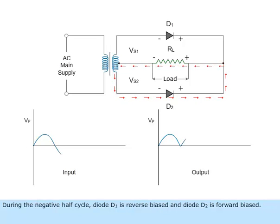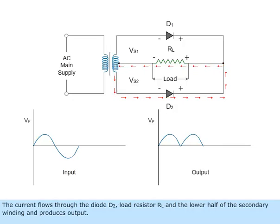During the negative half cycle, diode D1 is reverse biased and diode D2 is forward biased. The current flows through the diode D2, load resistor RL, and the lower half of the secondary winding and produces output.